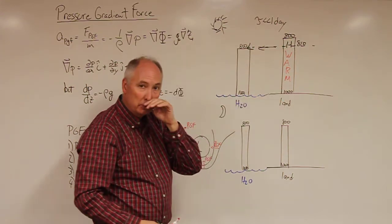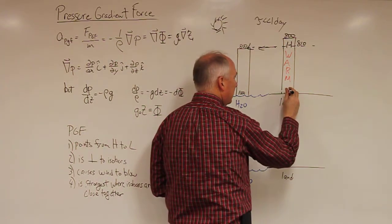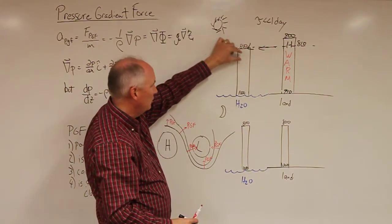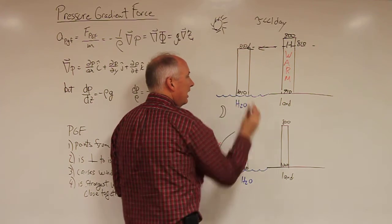But as you remove mass from this column of air and push it and add it to this column over here, it's going to reduce the pressure at the surface. So let's just reduce that to 990. And we're going to add that mass to this column over here, which is going to increase the surface pressure, to 1010.